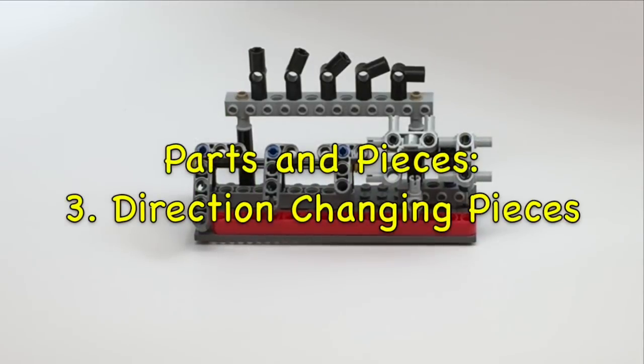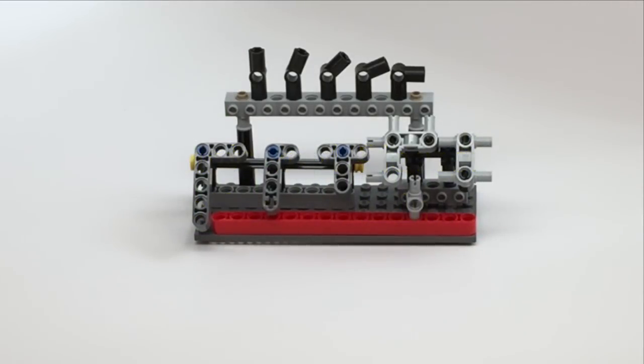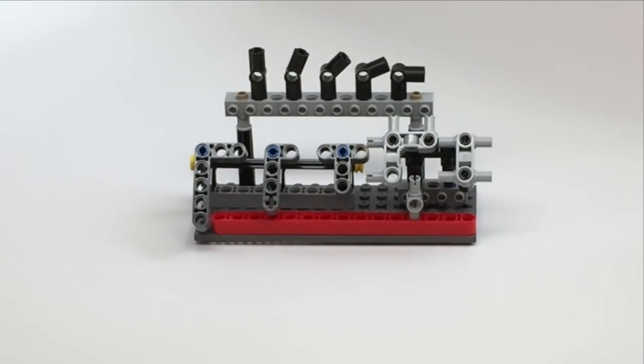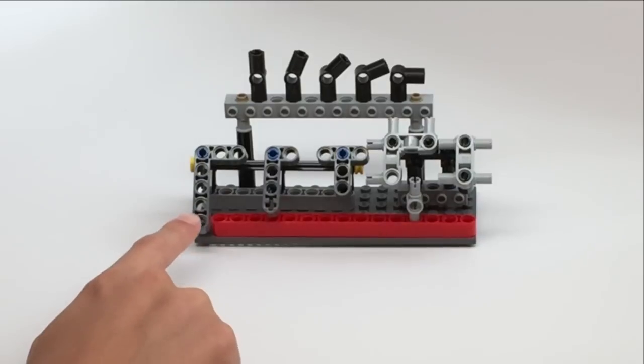This video is the third in our mini-series Parts and Pieces. In this video, we'll be talking about direction-changing pieces. Direction-changing pieces are LEGO pieces that allow you to build in different angles.